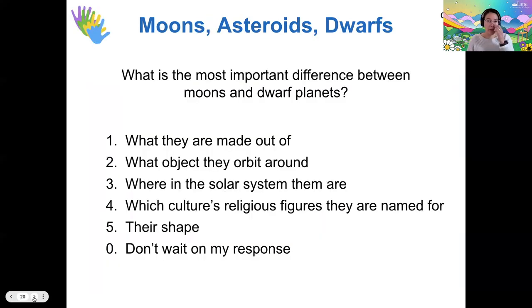So now let me ask you, what do you think is the most important difference between moons and dwarf planets? Okay. I'm seeing the most votes for option number two, but the difference is it's what object they orbit around. That's exactly right. So our dwarf planets can be similar in size to a moon, similar in composition, but dwarf planets orbit the sun, whereas moons orbit a planet.